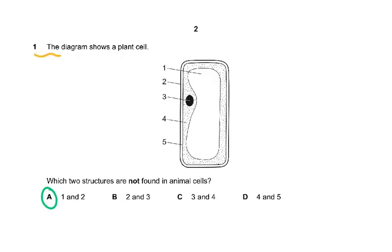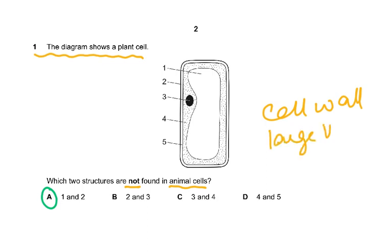Question one was very basic. The diagram shows a plant cell — which two structures are not found in animal cells? We all know there is a cell wall which is not present in an animal cell, and the large vacuole is also not present. So one was large vacuole and two was cell wall. A nucleus, cytoplasm, and cell membrane are all present in animal cells.